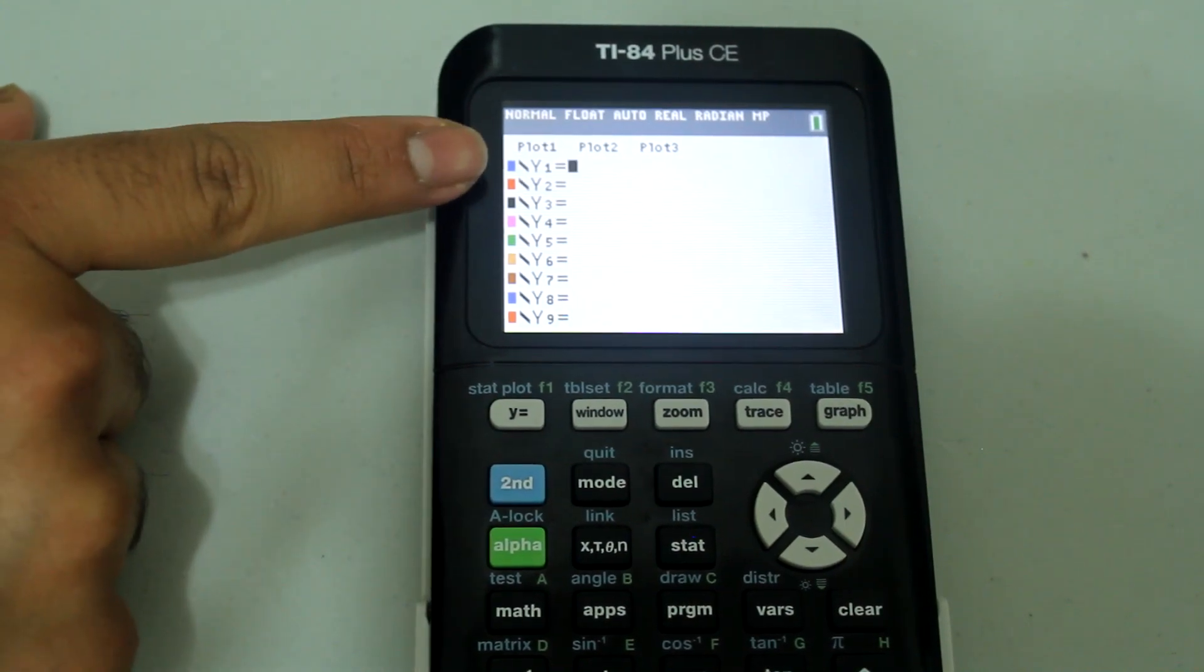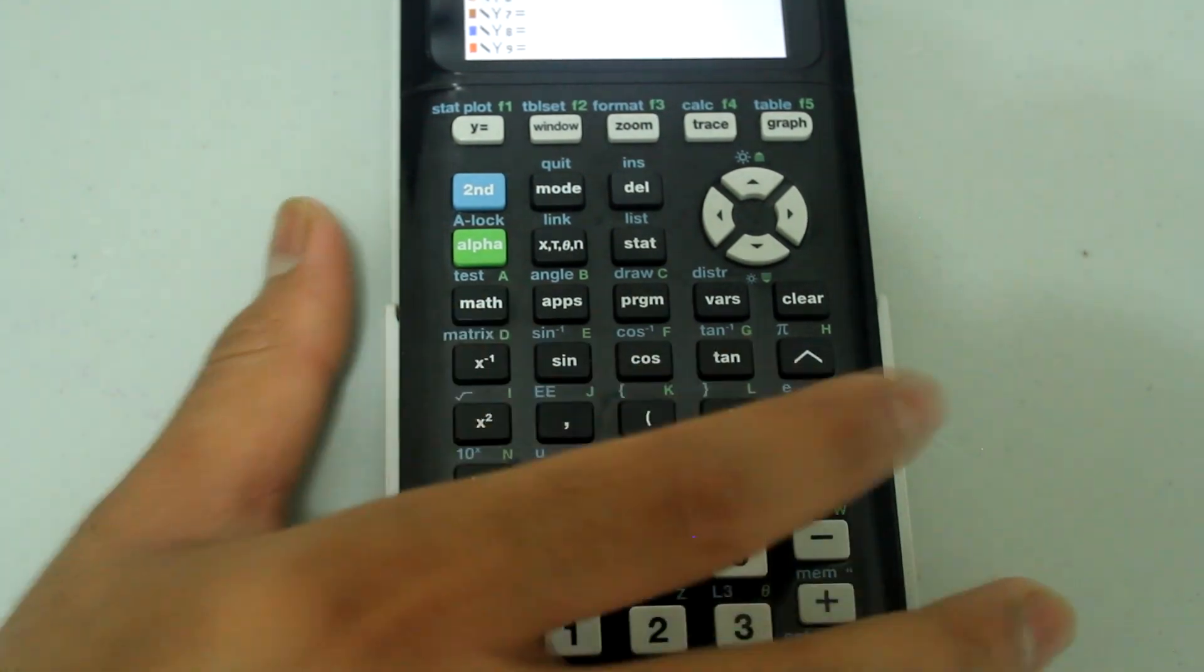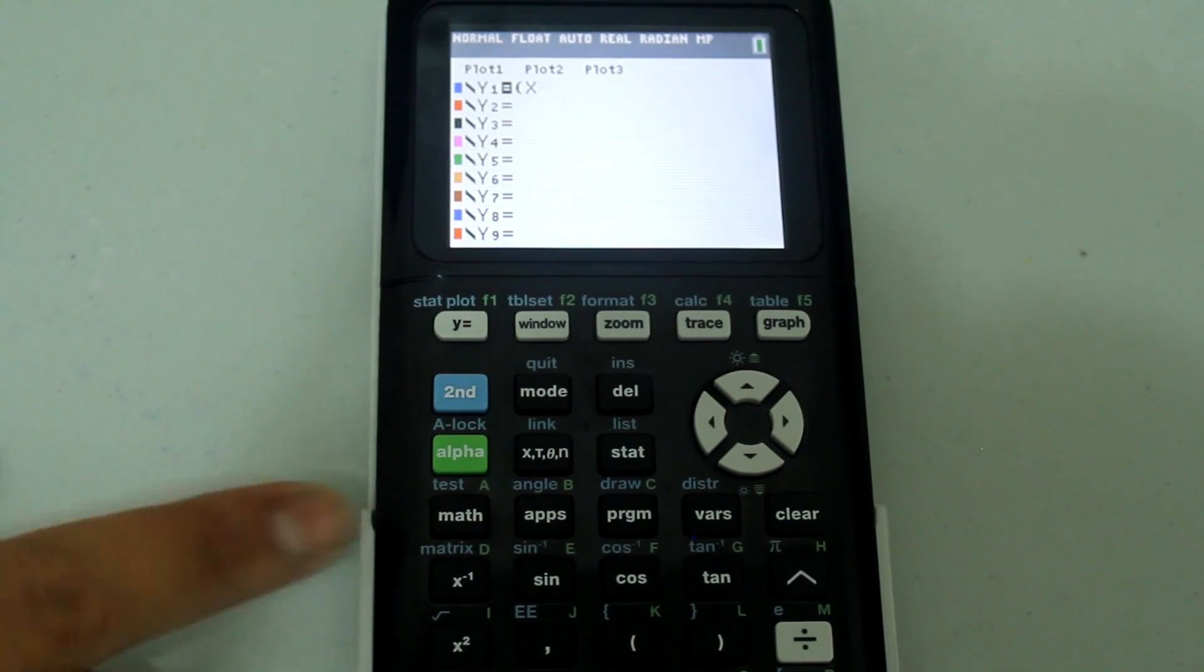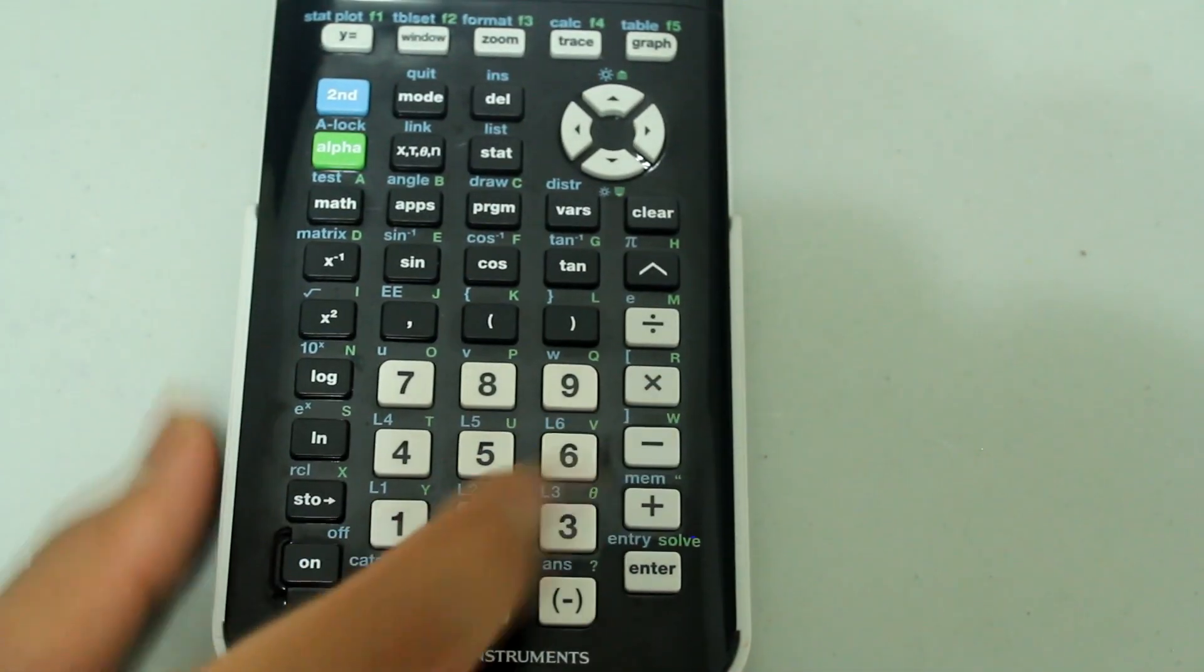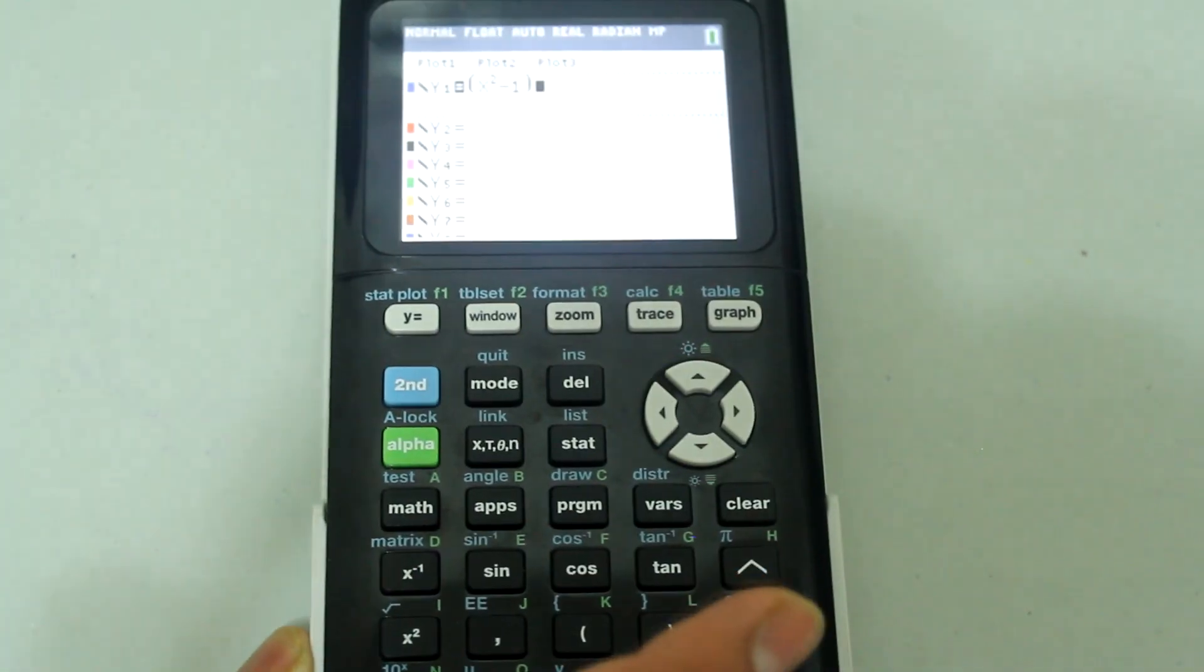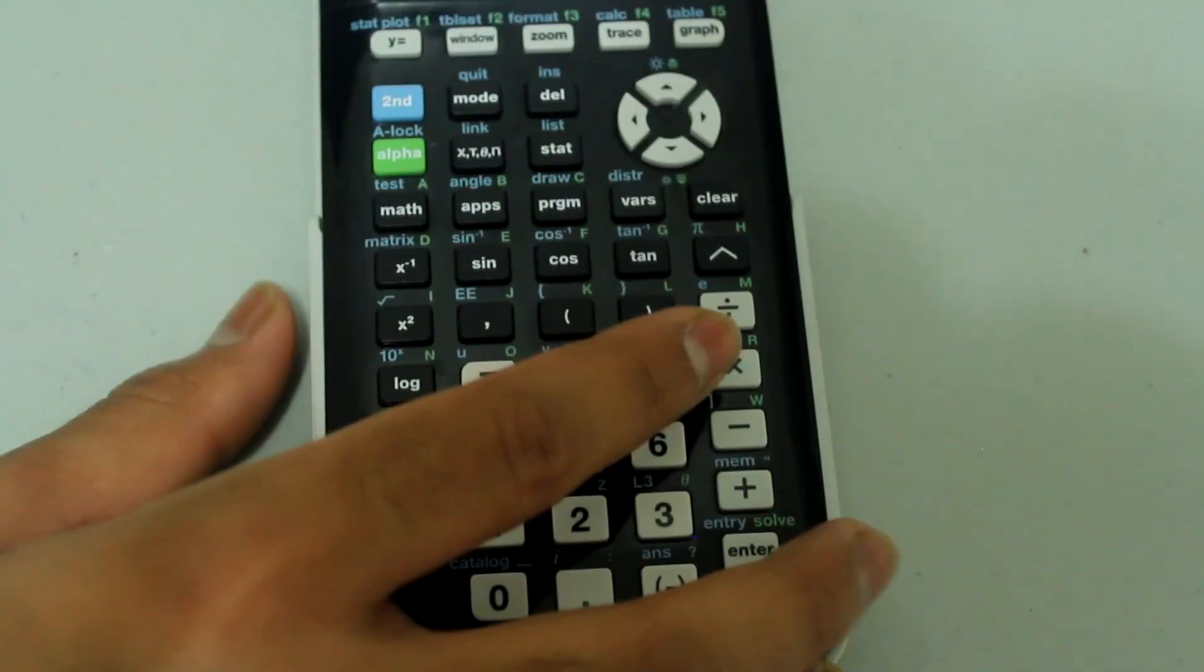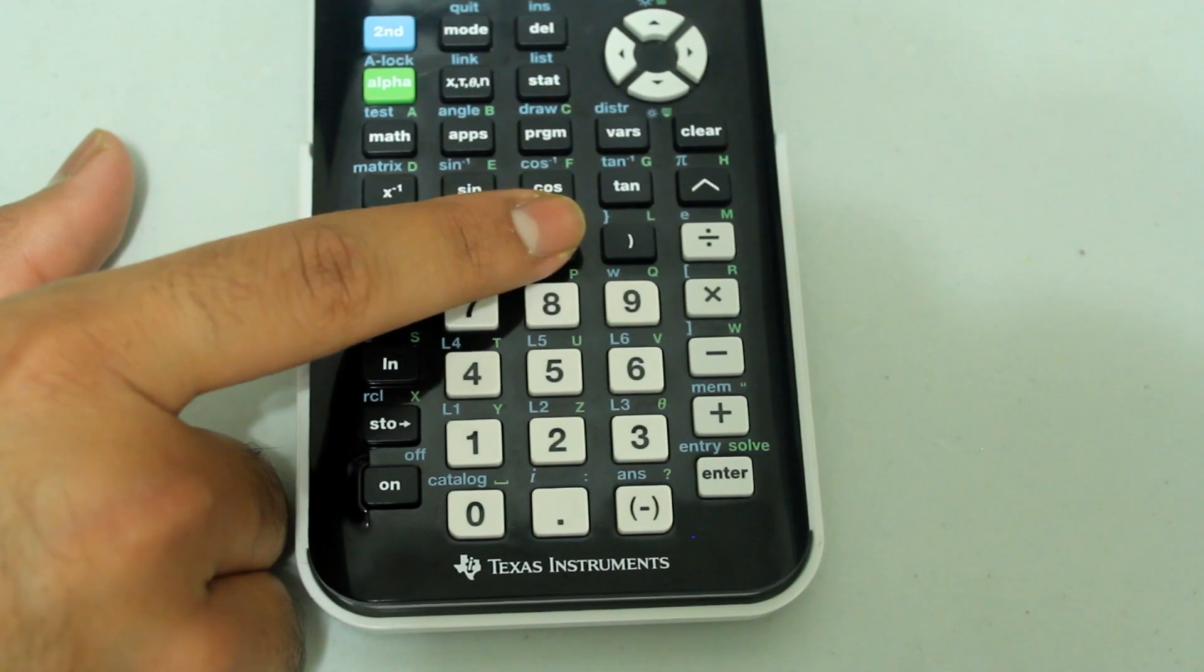Then for y equals we're going to open a parenthesis and then type in the first piece of our function which is x² - 1. We're going to close the parenthesis, so it looks like this now: x² - 1.